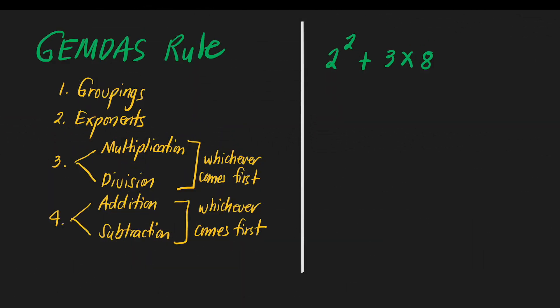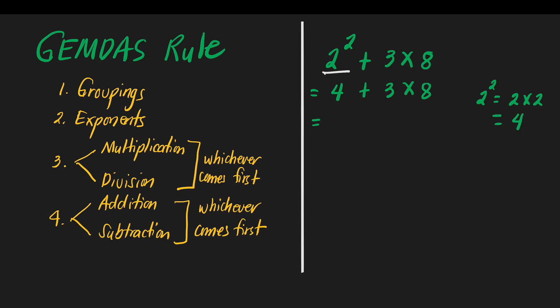Next, we have 2 squared plus 3 times 8. Do we have groupings? No. Do we have exponents? Yes, this time we have. 2 squared means 2 times 2, which equals 4. So we do 2 squared first, giving us 4, then copy 3 times 8. Are we going to add or multiply? Based on the GEMDAS rule, we do multiplication first: 3 times 8 is 24. So we have 4 plus 24, which equals 28. That is our answer.